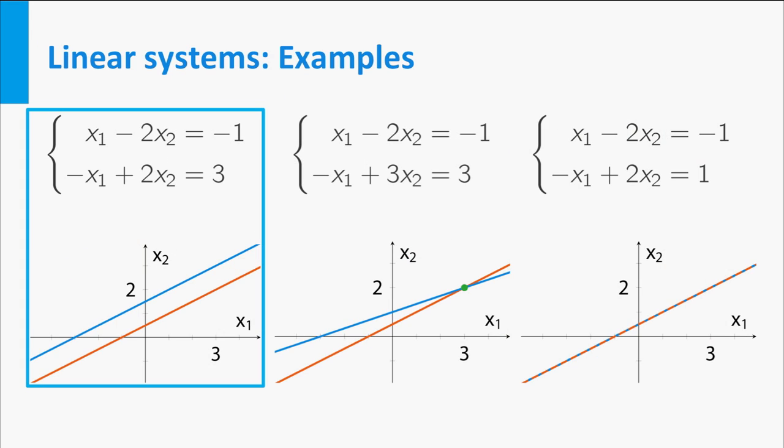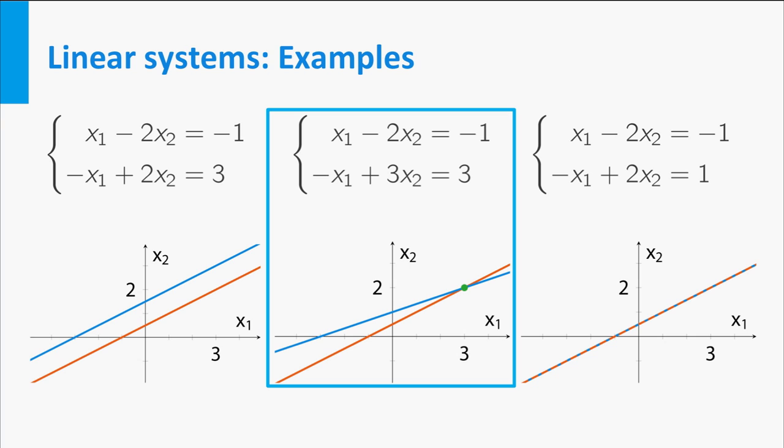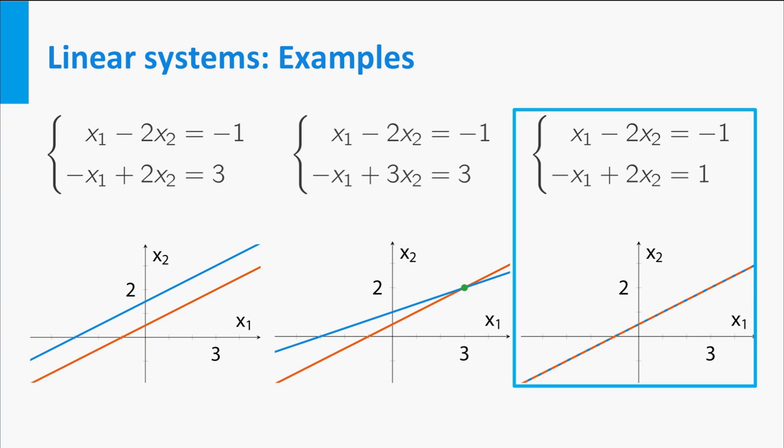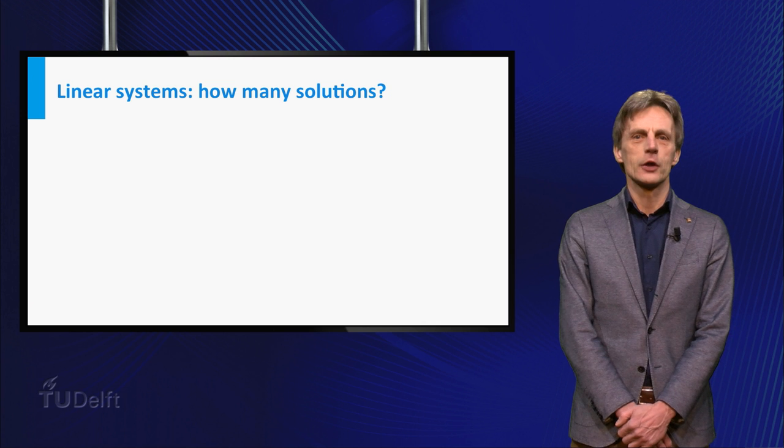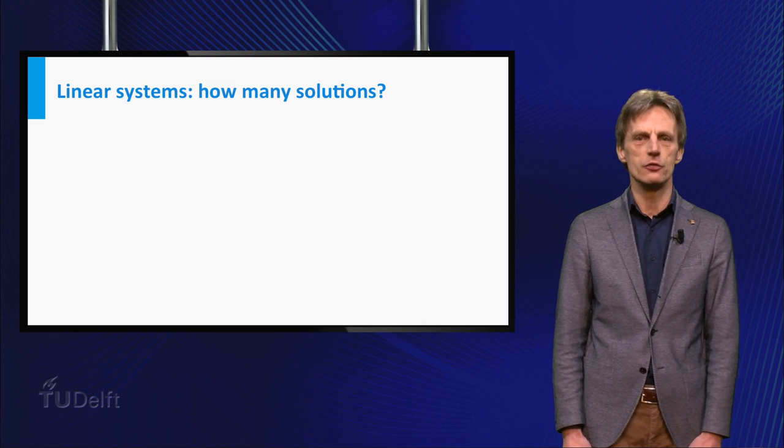From left to right you have a system with no solutions, a system with precisely one solution, and a system with infinitely many solutions. Now you might start to wonder how many solutions a system of n linear equations in n unknowns could have in general.